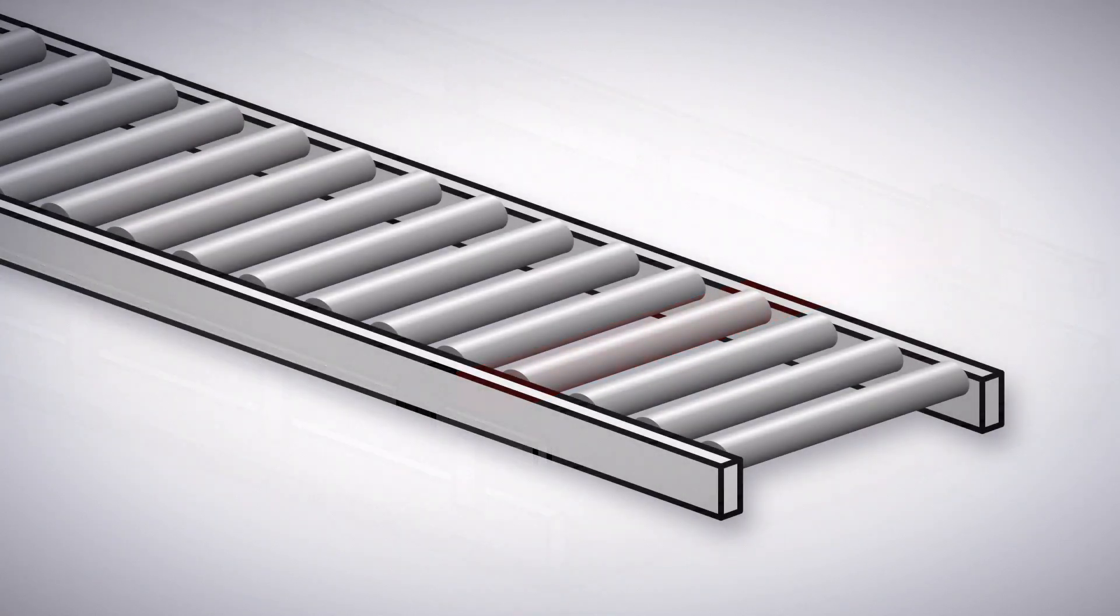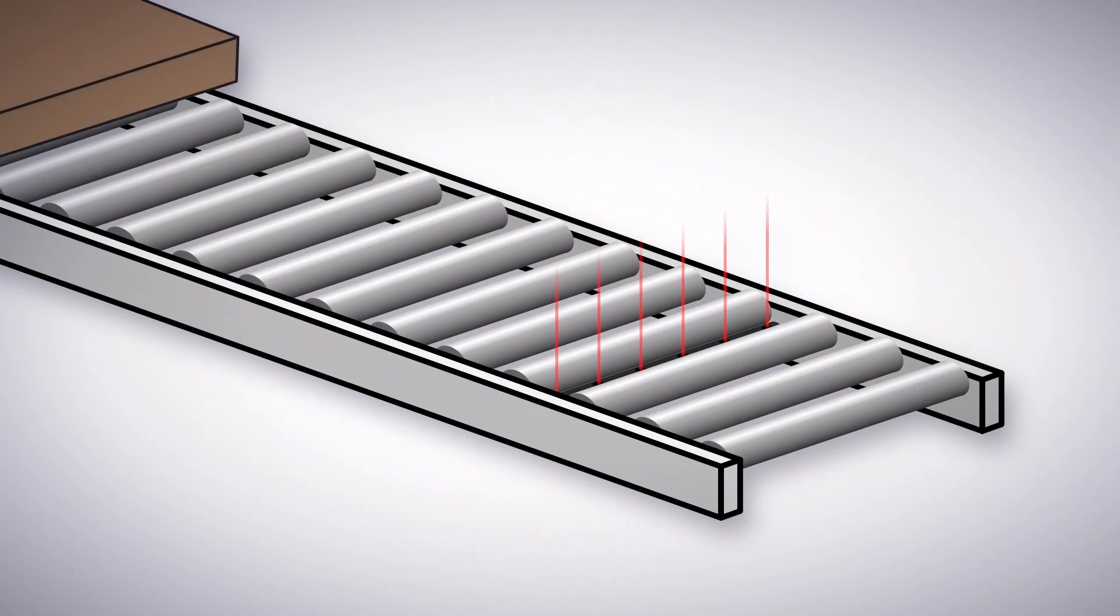For detecting items on a conveyor with outside rails, use a TTR, or through the roller sensor, that can be mounted between the rollers.